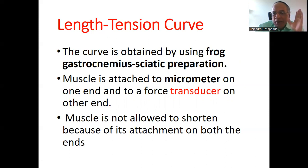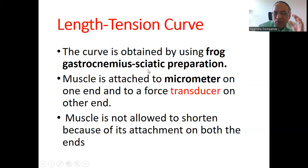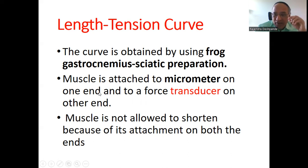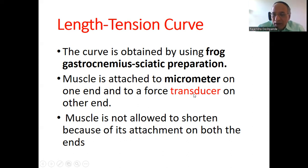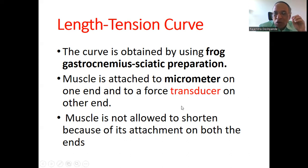In this experiment, the frog is taken and the gastrocnemius muscle and sciatic nerve are used — the calf muscle in humans is the gastrocnemius muscle. This model is called the gastrocnemius-sciatic preparation, which is common in animal experiments. The muscle is attached to a micrometer at one end — the micrometer is used to set the length — and to a force transducer at the other end. The muscle is not allowed to shorten because of its attachment on both sides, so the length cannot be changed.